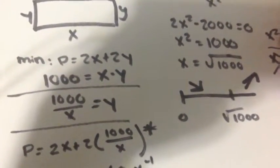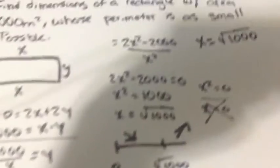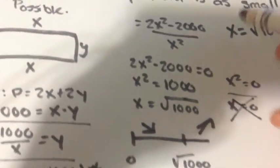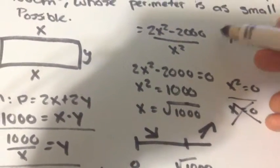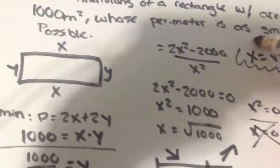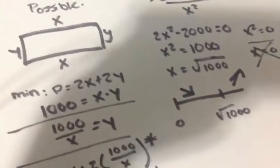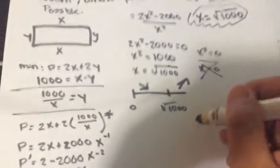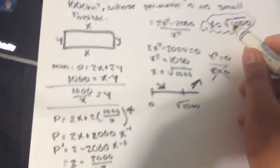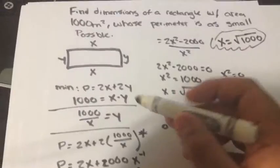The actual critical number which will be your x equals square root of 1000. And you plug that back in. You plug that to this equation.